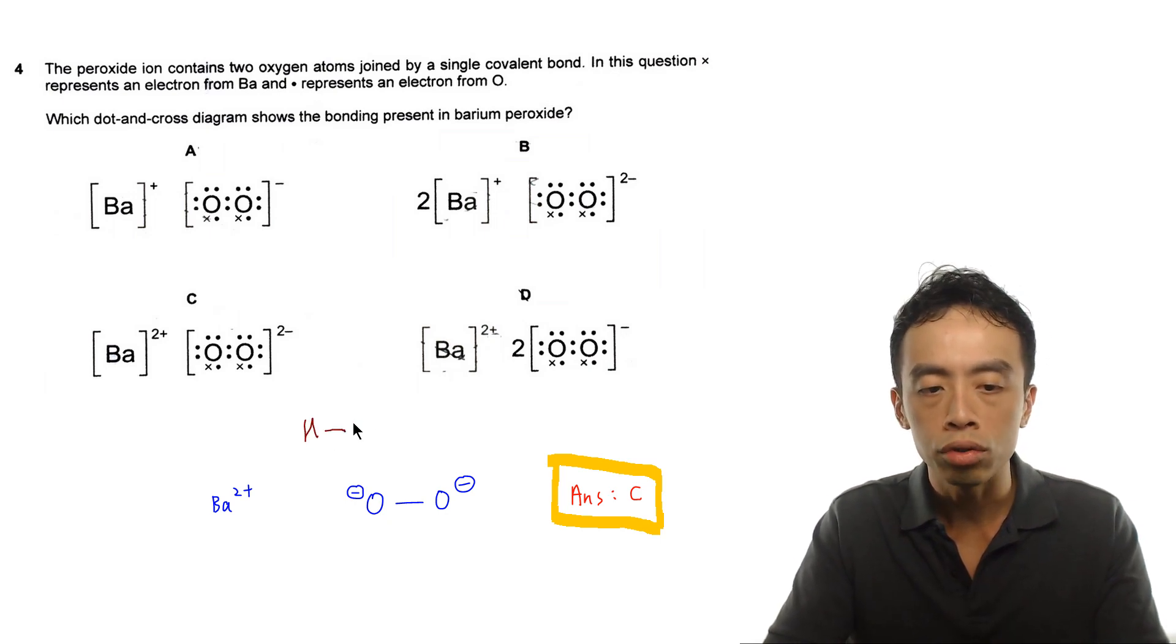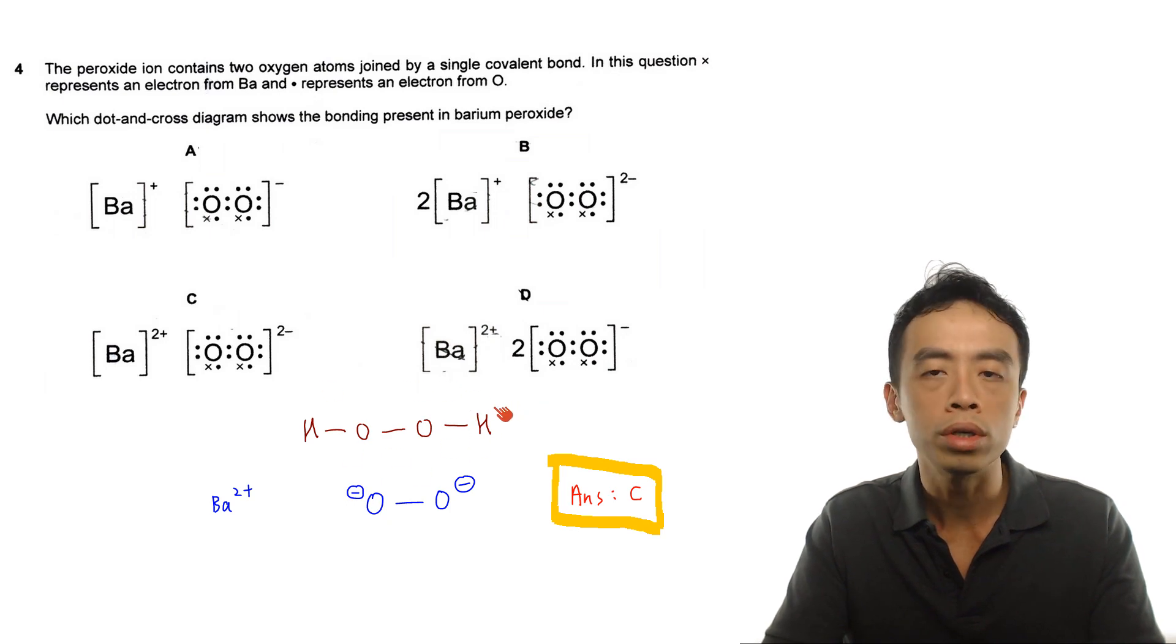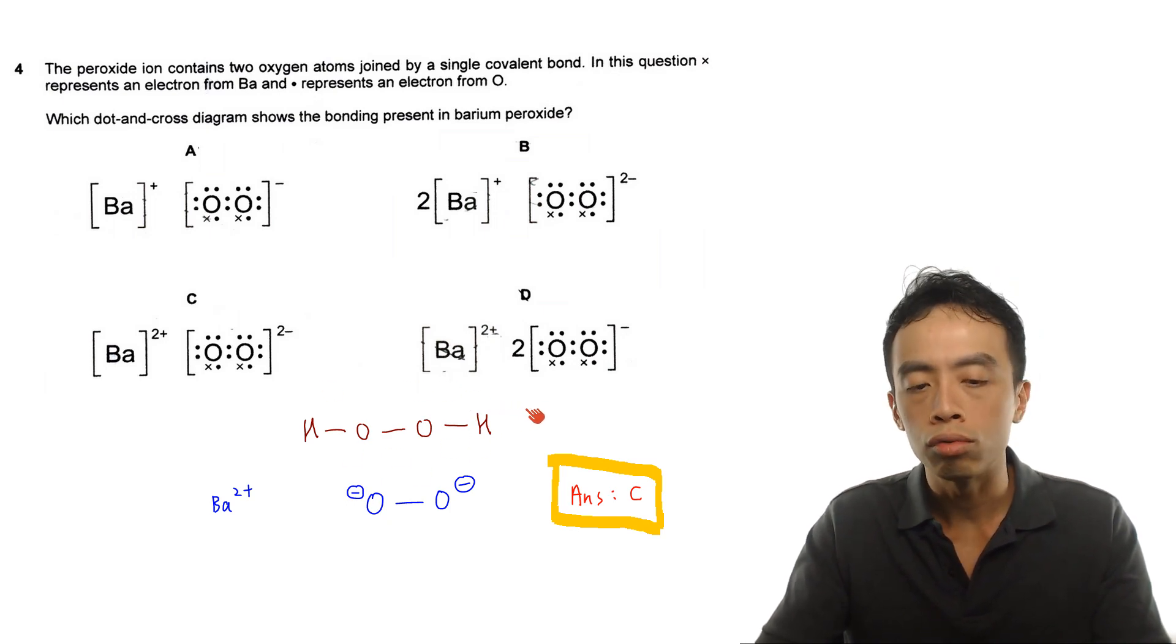Hydrogen will be attached to oxygen, and single bonded to an oxygen, single bonded to another hydrogen. So this will be the Lewis structure for hydrogen peroxide, H2O2.